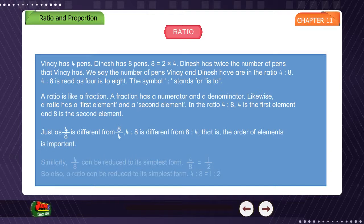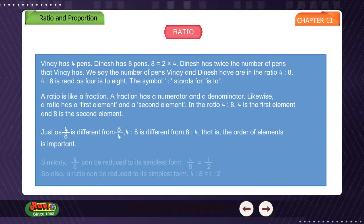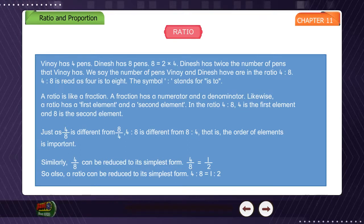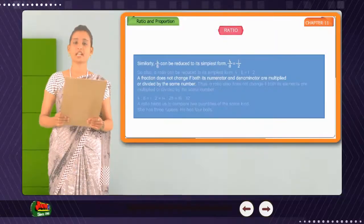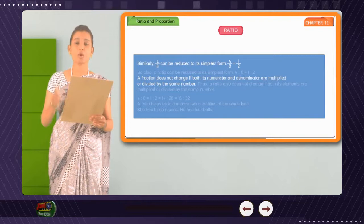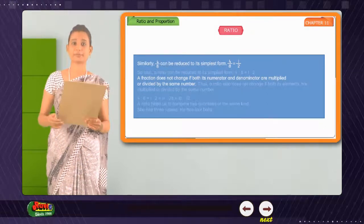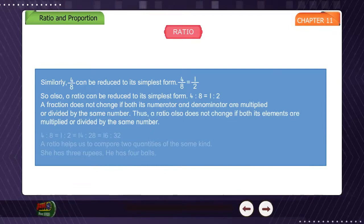Just as 4 by 8 is different from 8 by 4, the ratio 4 is to 8 is different from 8 is to 4. That is, the order of elements is important. Similarly, 4 by 8 can be reduced to its simplest form: 4 is to 8 is equal to 1 is to 2. A fraction does not change if both its numerator and denominator are multiplied or divided by the same number. Thus, a ratio also does not change if both its elements are multiplied or divided by the same number.